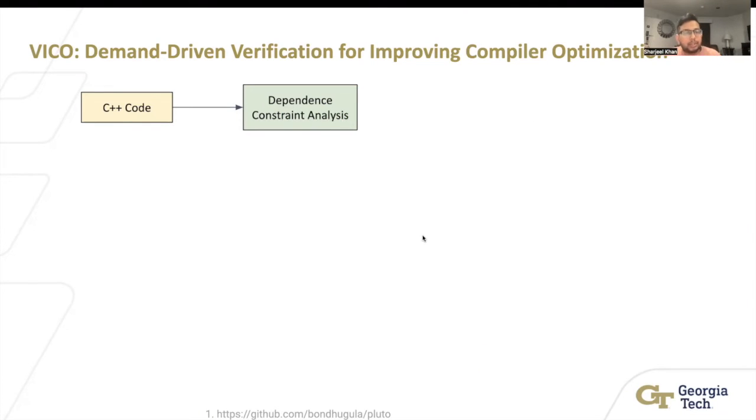Now that we have explained how SMACK works, we can actually go to our VICO framework and explain the step-by-step process we used to actually do this verification. Let's start with dependence analysis. And more specifically, let's start with the dependence constraint analysis. The first thing we have to do is detect the constraint. Pluto can actually tell you the dependencies within loops.